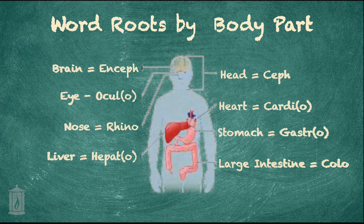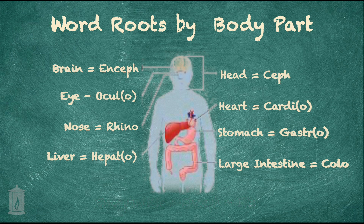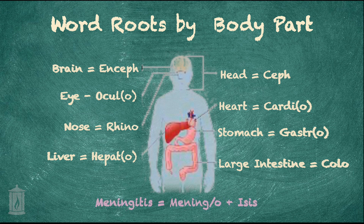Looking at our various body parts, the brain is defined as enceph. So let's look at a few words. Encephalitis would mean inflammation of the brain. The spinal cord is myel, M-Y-E-L, with a connective O. We could get more precise than both of these by having meningitis, which would be inflammation of the meninges — a covering that covers both the brain and the spinal cord.